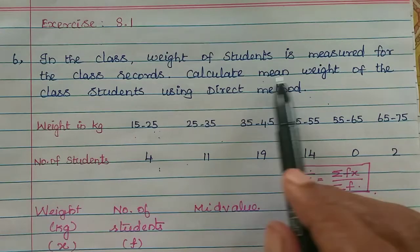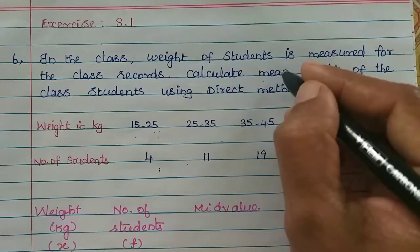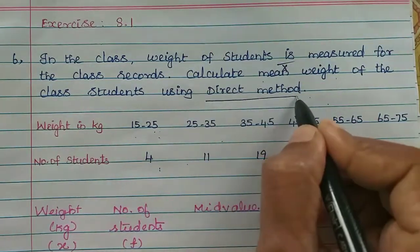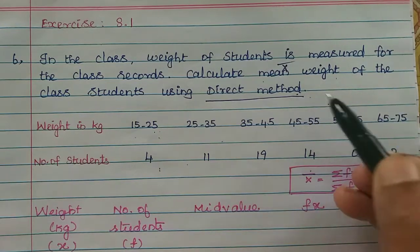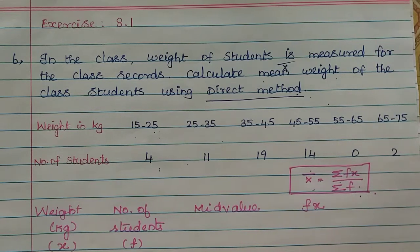We will see the mean weight of the class. The mean weight of the class is equal to x bar. We will use the direct method. The formula for direct method is x bar equal to sigma fx by sigma f. This is the direct method formula.